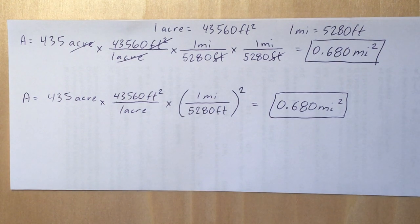Okay, so when we do that, that cancels out both of the feet, or feet squared, and then we multiply miles times miles, and we get miles squared. So the answer is going to be 0.680 miles squared.